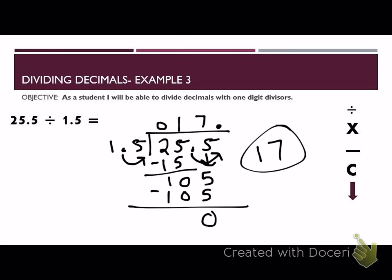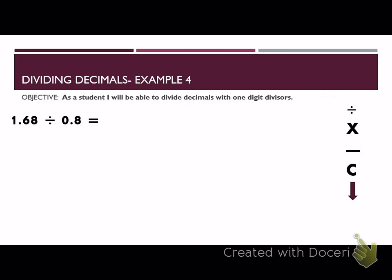Here it is. On your graphic organizer, please make sure that you've got example 4 ready to go. Remember, your objective is, as a student, you should be able to divide decimals with one-digit dividers. If you need help after this example, please sign up for a workshop with Mr. Williams or another adult in the classroom. Here we go.